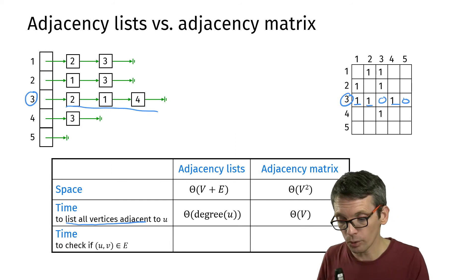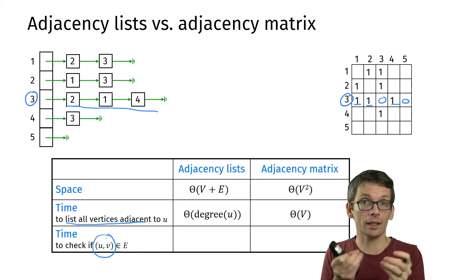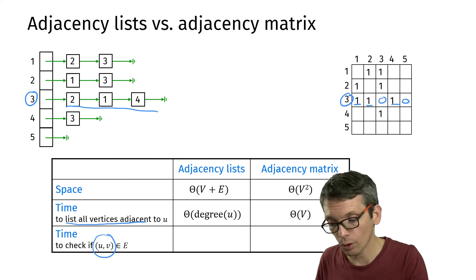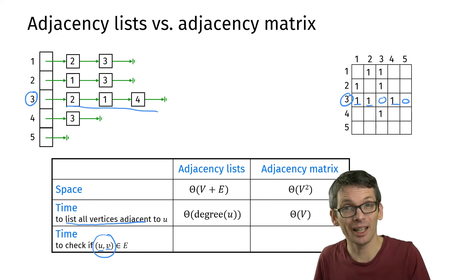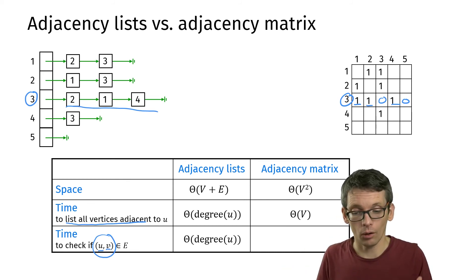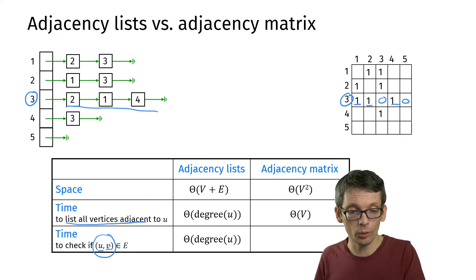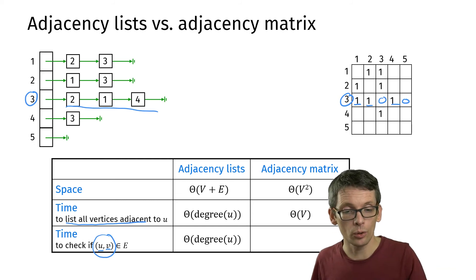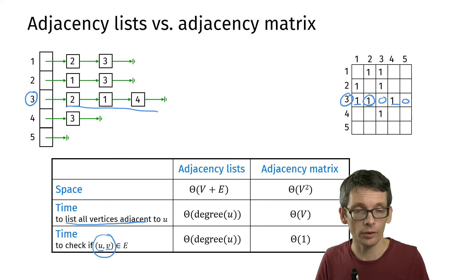Another operation is checking whether a certain edge (u, v) is in the graph. With adjacency lists, you must search through the adjacency list of u to find v, taking O(degree(u)) time — somewhat inefficient. With an adjacency matrix, you simply look up entry (u, v) in the matrix, which takes constant O(1) time. So adjacency matrices excel at edge existence queries.